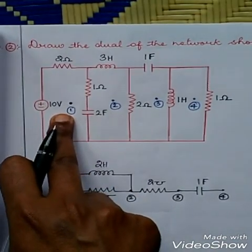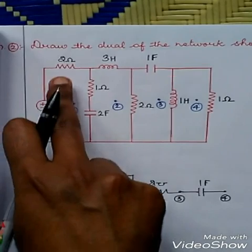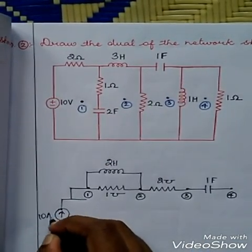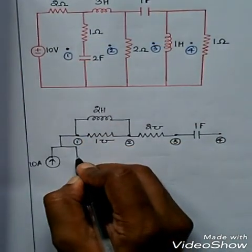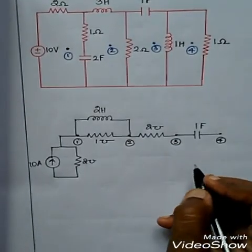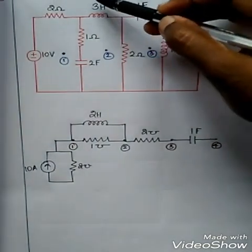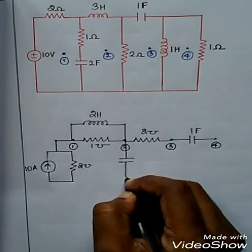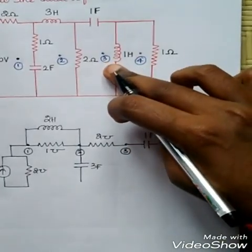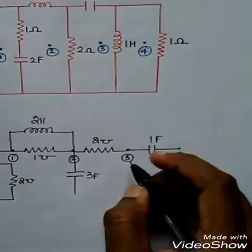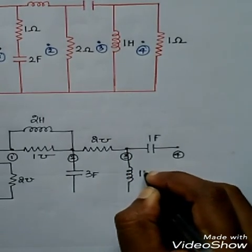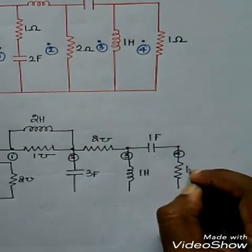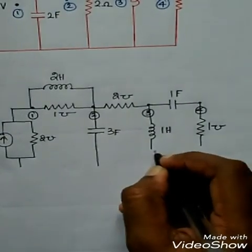Find the unique elements in each mesh. Mesh 1 has unique elements: 10 volt and 2 ohm branch in series, so convert them to parallel — 10 volt becomes 10 ampere current source, and 2 ohm becomes 2 mho. In mesh 2, the unique element is 3 Henry inductance, converted to 3 farad capacitance. In mesh 3, the unique element is 1 farad, converted to 1 Henry. In mesh 4, the unique element is 1 ohm resistor, converted to 1 mho conductance.